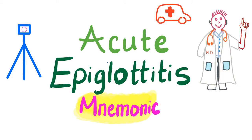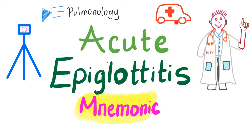Hey guys, it's your favorite medical channel, Medicosis Perfectionalis, containing our playlist called Pulmonology — the series of lectures that's only possible because of a generous guy called Dr. Joe. In the previous video, we talked about acute epiglottitis, the emergency situation which can occlude the airways leading to asphyxiation. Today, we'll have a mnemonic about acute epiglottitis, and this is a tripod to remember the tripod position of the kid. Let's get started.